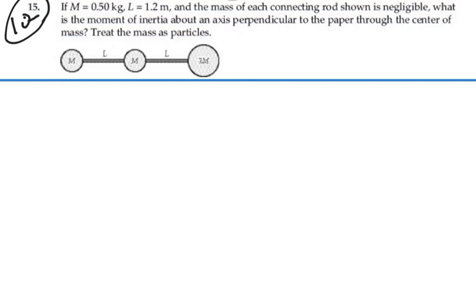So we have three masses here: an m, an m, and a 3m. And we have them connected by rods which are a distance l apart. The rods themselves are massless.